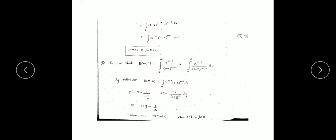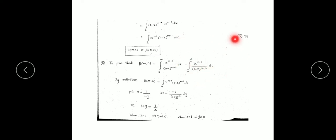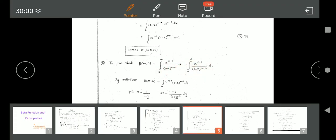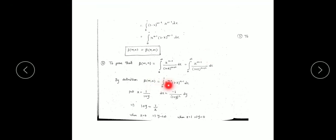Next, let's look at the second property of the beta function: to prove that β(m, n) = integration from 0 to infinity of x^(n−1) / (1+x)^(m+n) dx, and also equals integration from 0 to infinity of x^(m−1) / (1+x)^(m+n) dx by the symmetric property. Starting from the definition: β(m, n) = integration from 0 to 1 of x^(m−1) (1−x)^(n−1) dx.